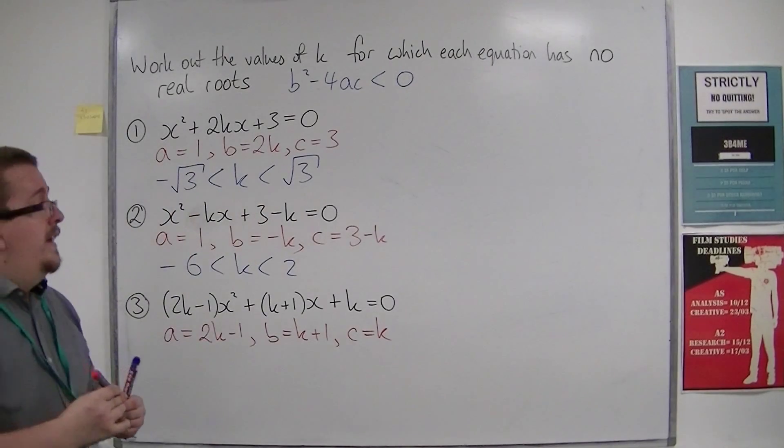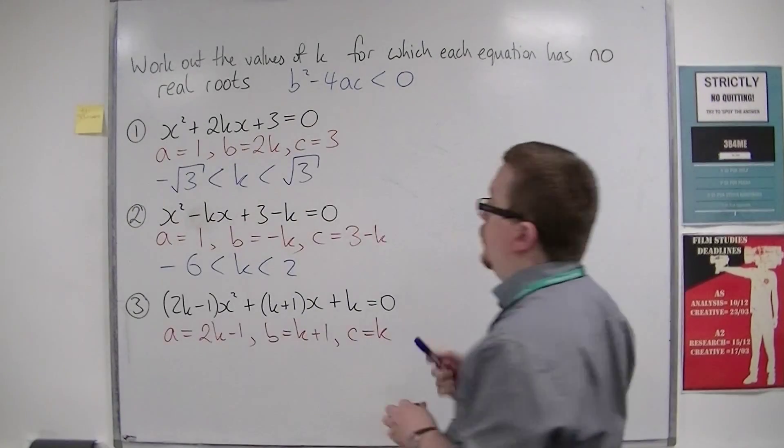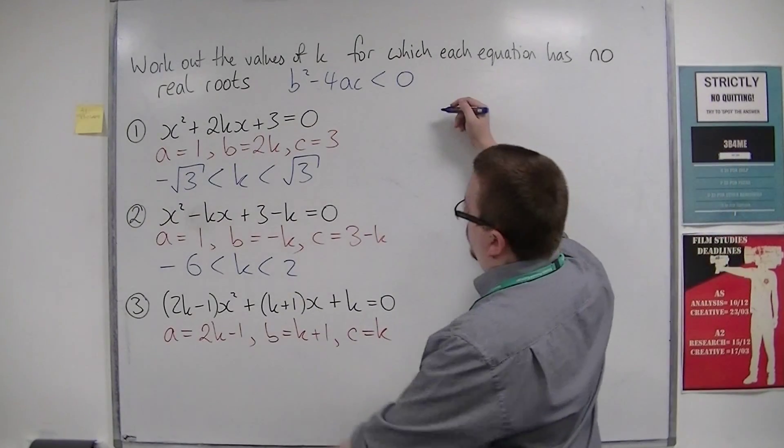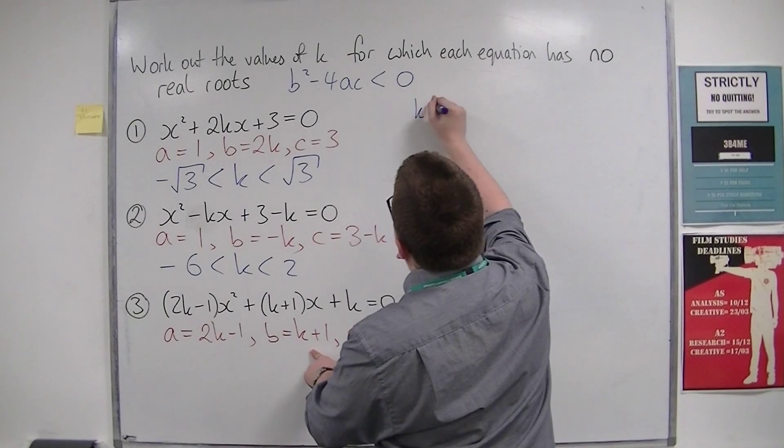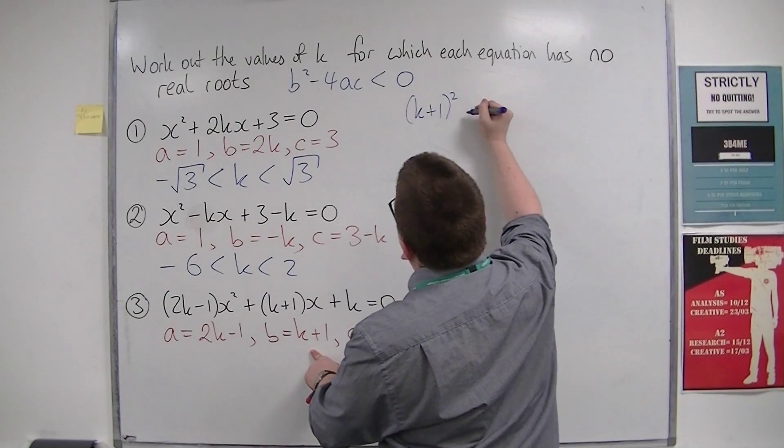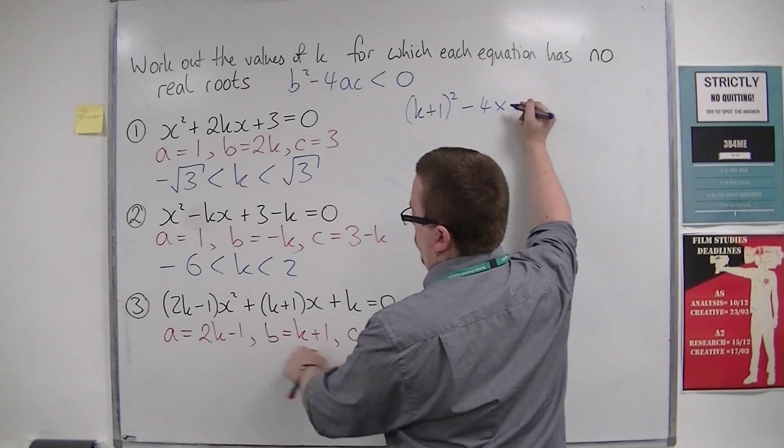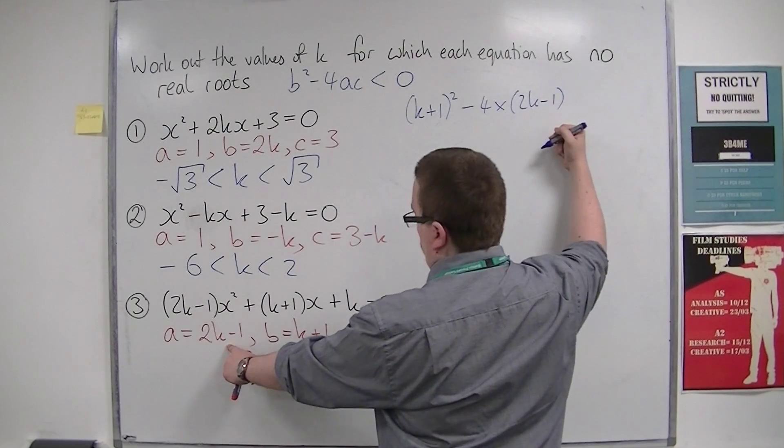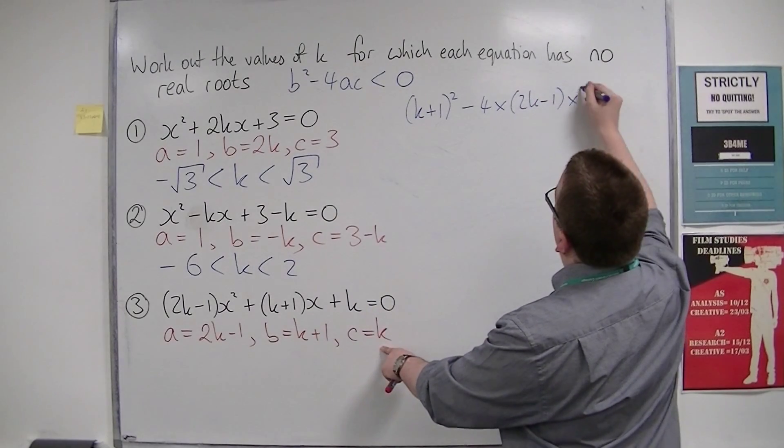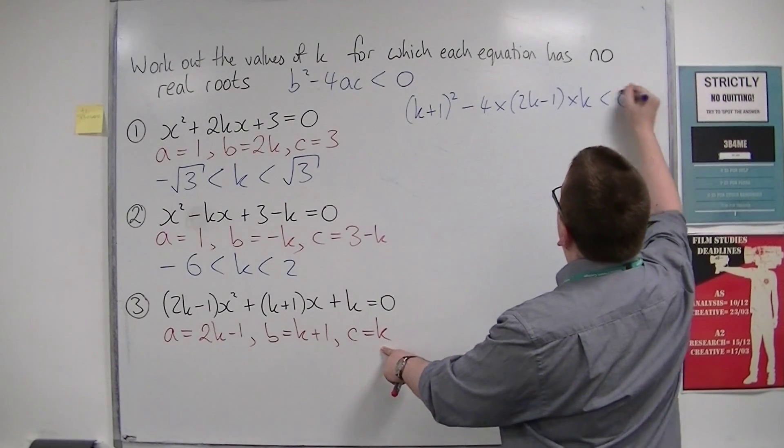Substitute those into the discriminant inequality. b is k + 1, so (k + 1)² - 4(2k - 1) times c (which is k). And that's got to be less than 0.